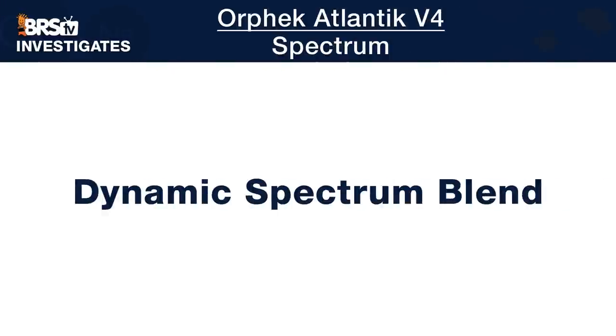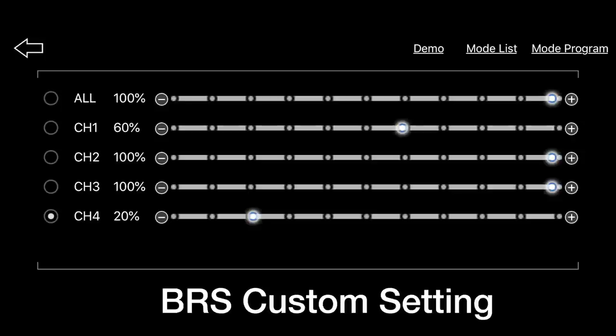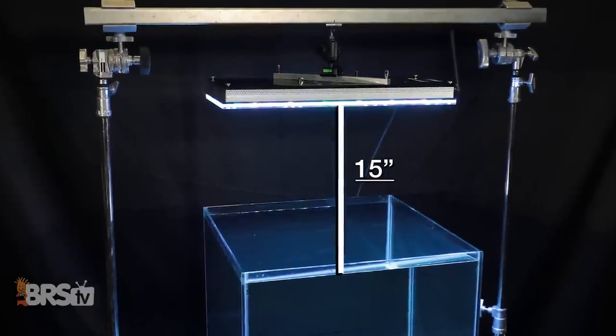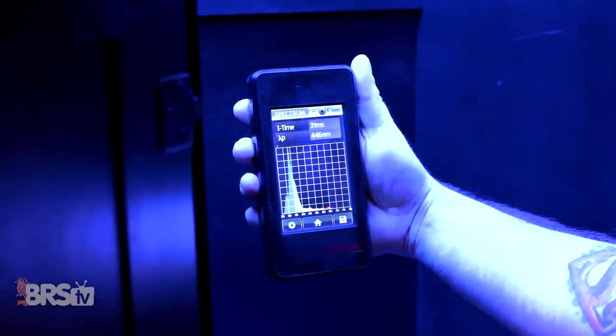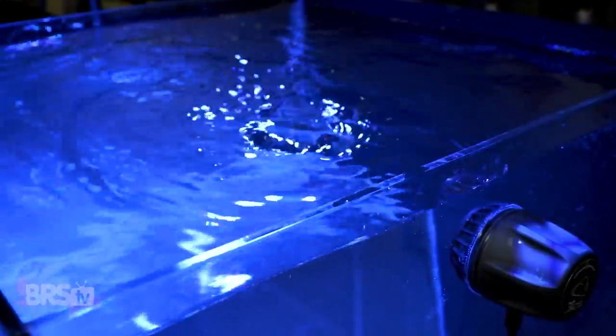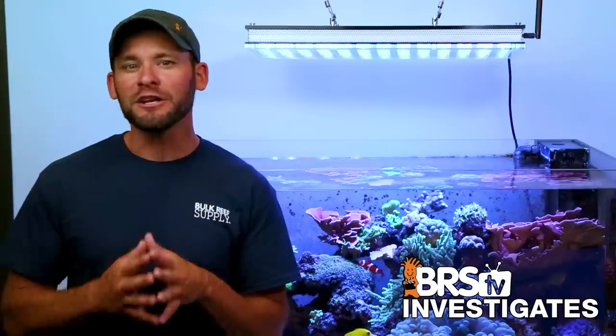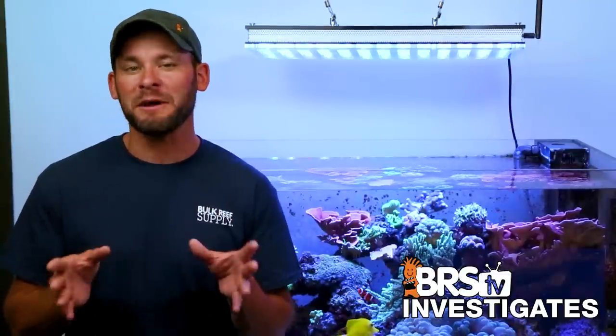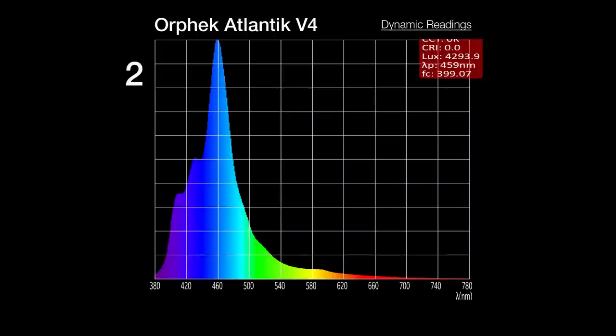Now we move on to our third component of spectrum testing with a dynamic test of blending, where we set the Orphic to our recommended spectrum ratio mix we just gave you, mounted it 15 inches off the top of the water, and use a spectrometer to take 10 spectrum readings under our 60 gallon tank of turbulent water, looking for extreme shifts to that spectrum which would indicate color separation and poor spectrum blending. As we cycle through those 10 readings, other than some peaks and valleys that fluctuate below 435 and in that violet near UV range, for the most part, our recommended spectrum remains relatively blended.